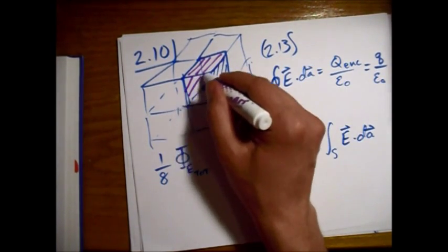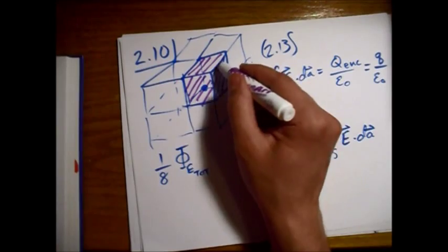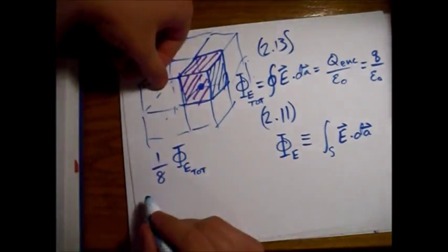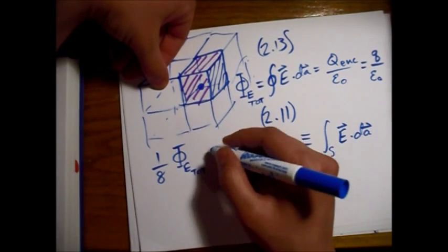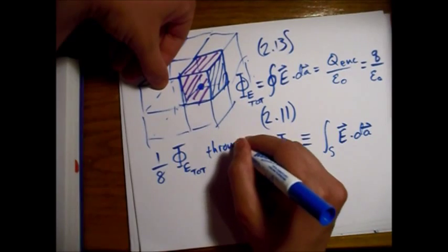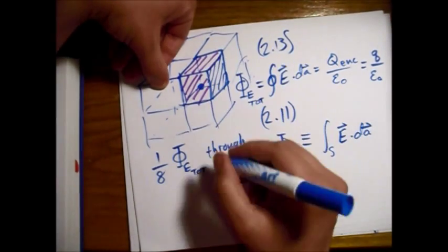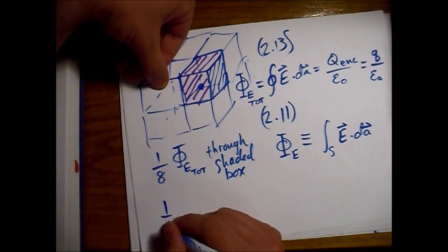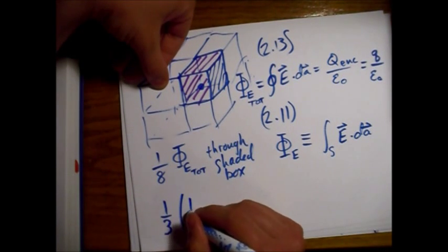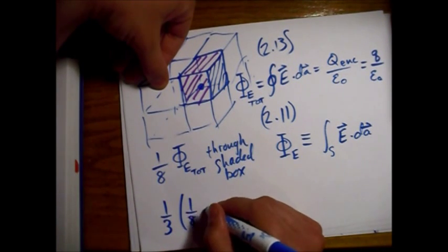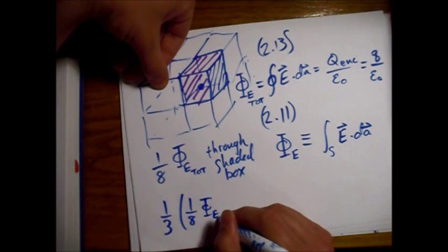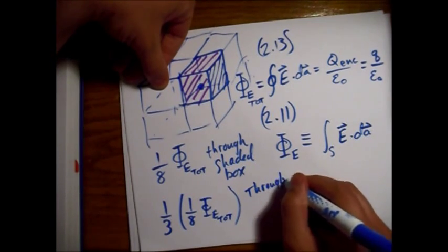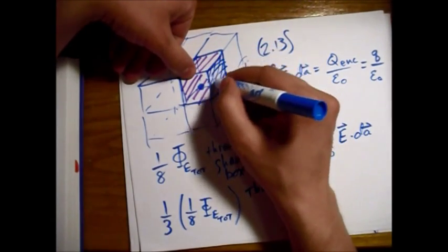So really, for this box here, there's only three faces that we have to worry about. There's this top one, this one over here, and then the original one that we're actually looking for. So one eighth of the total flux goes through the shaded box, and one eighth of that one eighth of the flux goes through the blue shaded side.